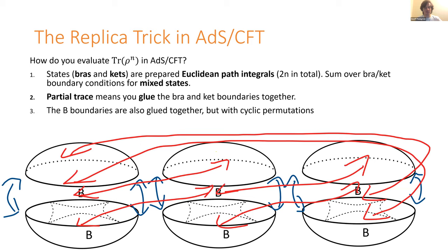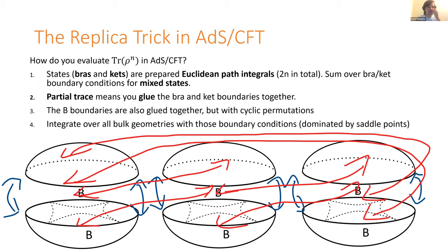That gives us some boundary conditions — a Riemann surface with non-trivial topology — and then we evaluate this using the gravitational path integral by integrating over all bulk geometries with these boundaries. When genus goes to zero, everything is semi-classical, and you can approximate the bulk path integral by a sum over bulk saddle points — solutions to the classical bulk equations.